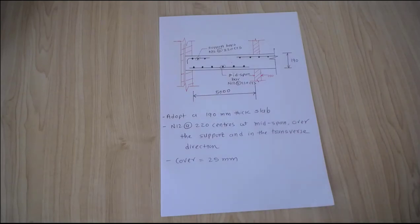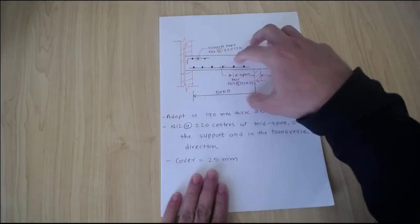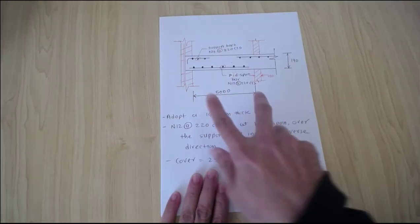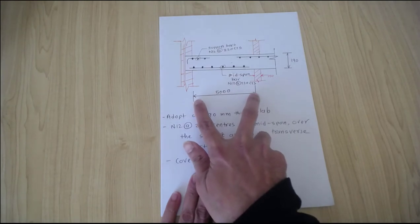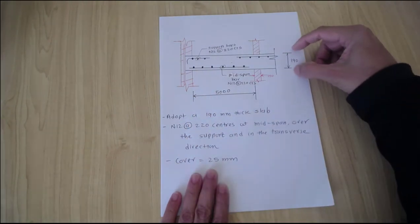This is the last video summarizing everything and drawing the reinforcement in the slab. In the question, we have supports which are 5 meters at a distance. We calculated 190 millimeter thick slabs.